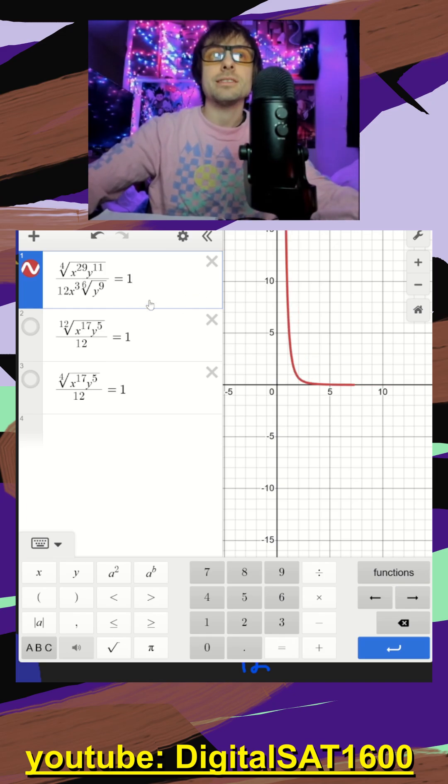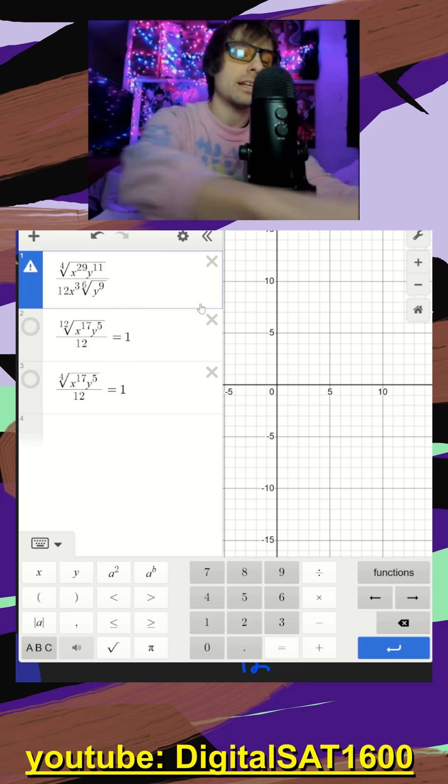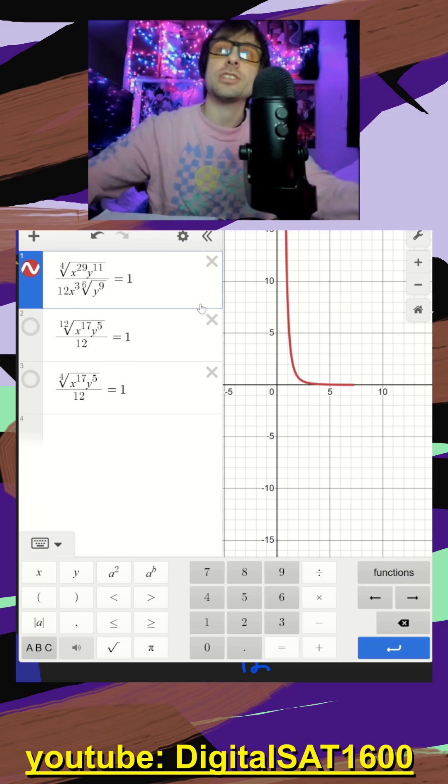Number two is when you have an x, y function, it needs to be equal to something. So you'll notice this little error symbol. It doesn't matter what you set it equal to. I just set it equal to one just so it shows up on my graph. And finally, number three, all you have to do is type in your answers until one of your graphs match because it's supposed to be equivalent.